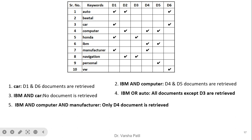For the query 'IBM AND computer', we can easily find that IBM and computer both match in D4 and D5, so those documents are retrieved. Similarly, when the AND operator is used, all keywords must be present in the same document. When the OR operator is used, the keyword should be present in any one of the documents.